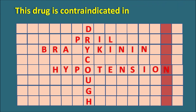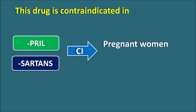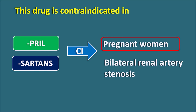This drug is contraindicated in — what is one important contraindication of ACE inhibitors? PRILs as well as SARTANs are contraindicated in two conditions: first, they are teratogenic and contraindicated in pregnant women; second, they are contraindicated in bilateral renal artery stenosis, where the afferent and efferent arterioles are narrowed. One important contraindication of these drugs is pregnancy — we fill in pregnancy.